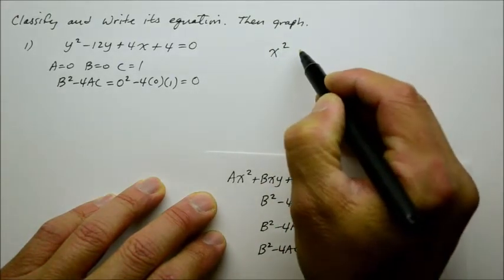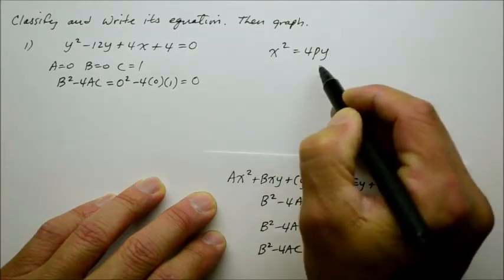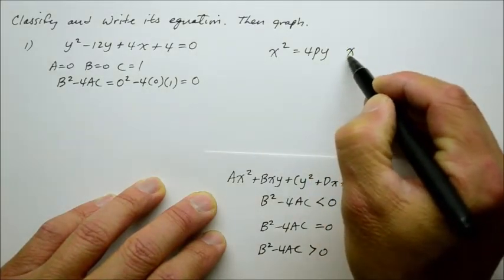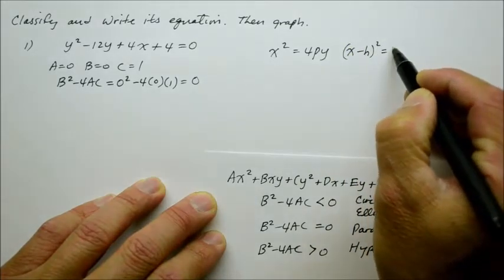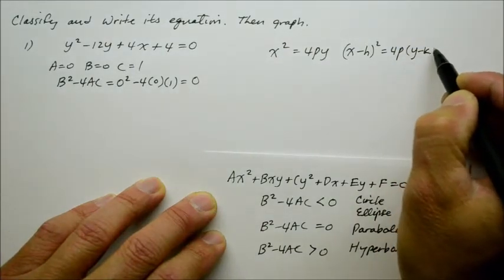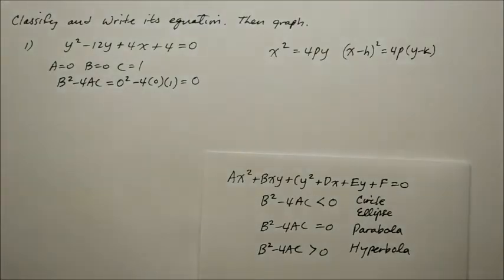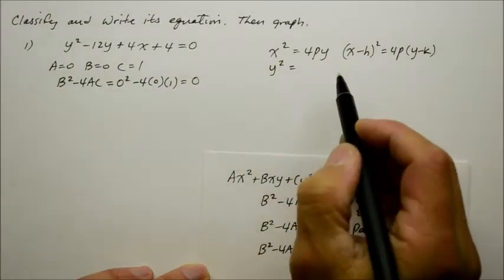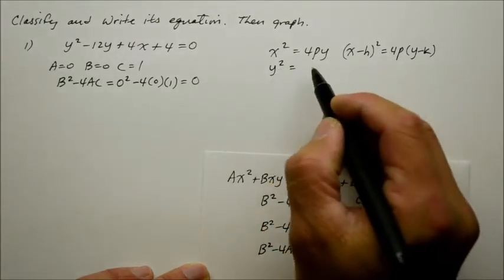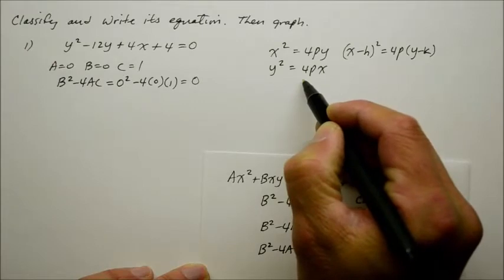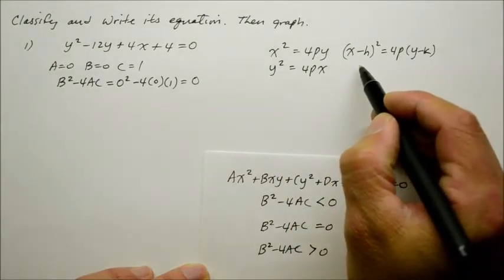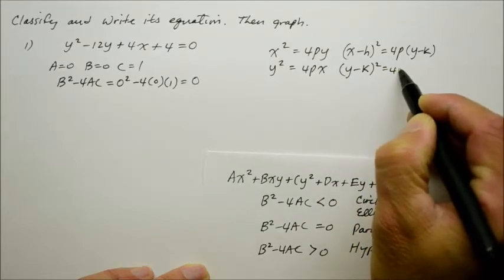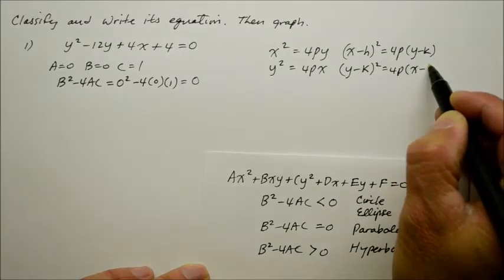Well, it depends. x² equals 4py, and that's the basic, where the vertex was at the origin. However, when there is a translation, we say (x-h)² equals 4p times (y-k). And if we have, as a function of y, a parabola that opens either to the right or to the left, it's given as y² equals 4px. But when we have a translation, where the vertex is shifting, we say (y-k)² equals 4p(x-h), in alphabetical order.